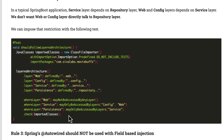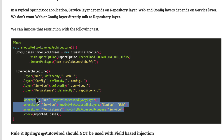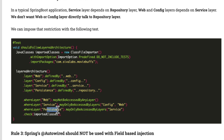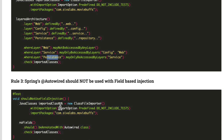Here is an example where we define various layers — web layer, config layer, service layer, and persistence layer — and specify which package structures contain those components. We then express architectural concerns such as: web layer may not be accessed by any layer (since controllers are called by frameworks, not our code), service layer may only be accessed by config and web layers, and persistence layer may only be accessed by the service layer.